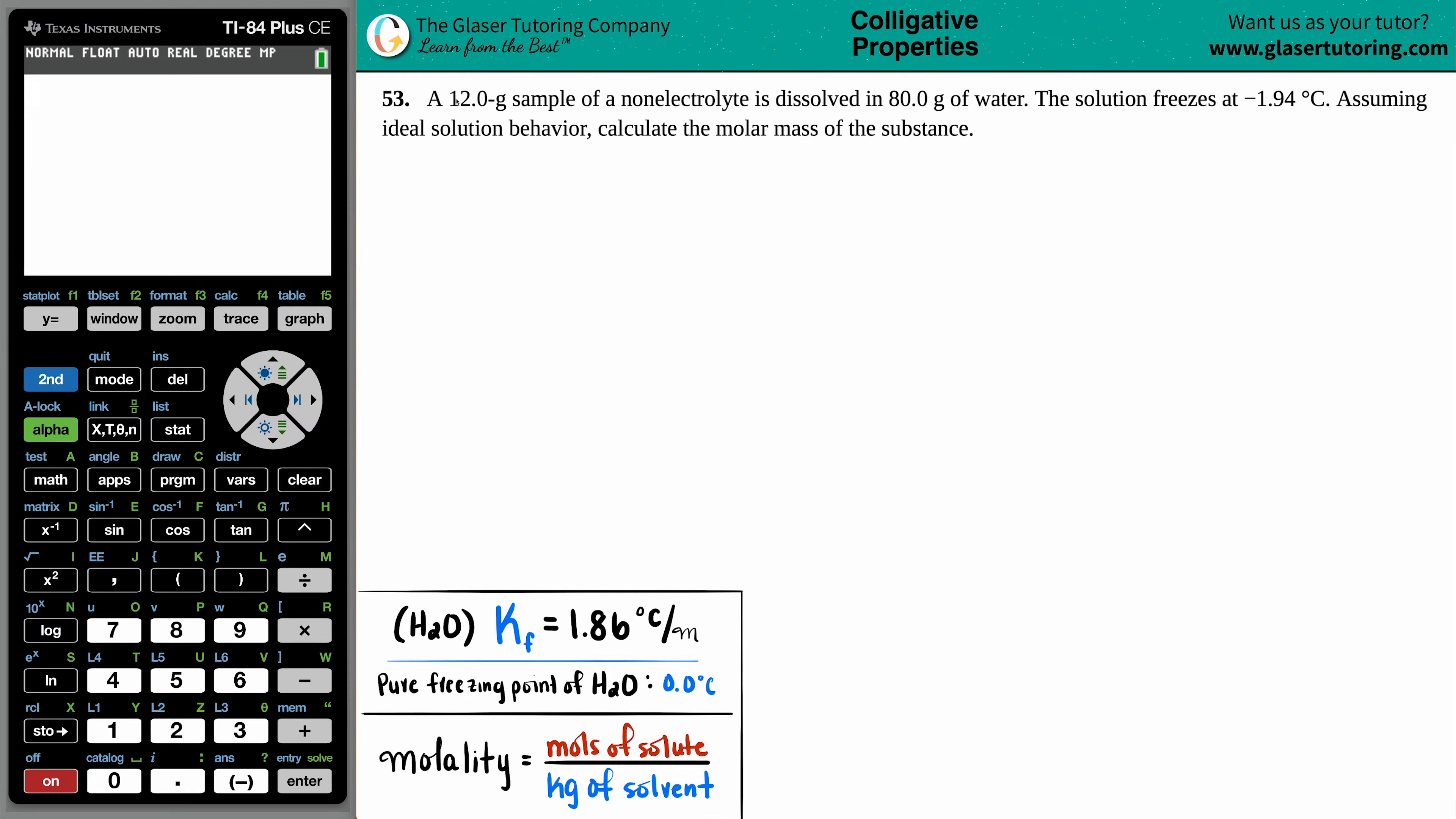Number 53. A 12.0 gram sample of a non-electrolyte is dissolved in 80.0 grams of water. The solution freezes at negative 1.94 degrees Celsius. Assuming ideal solution behavior, calculate the molar mass of this substance.